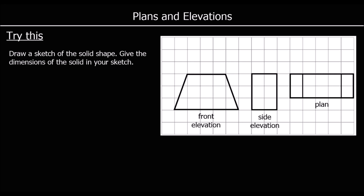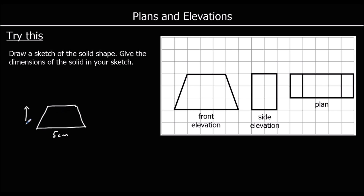Looking at the front of the shape, we've got a trapezium. It's 5 along the bottom and 3 higher. So 5 along the bottom, the top of the trapezium is also 3 — giving us 5 centimetres at the base, a perpendicular height of 3 centimetres, and 3 centimetres as the top of the trapezium.